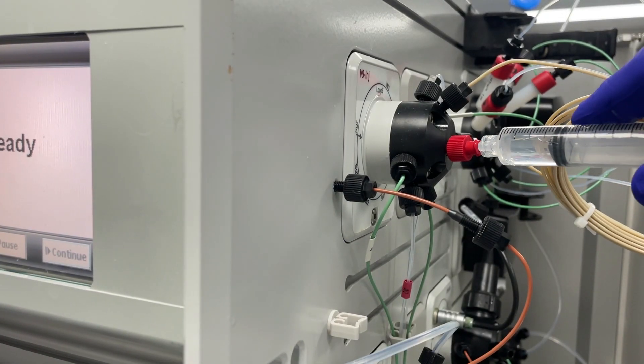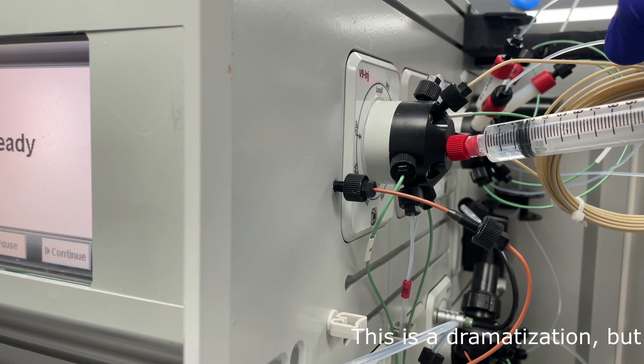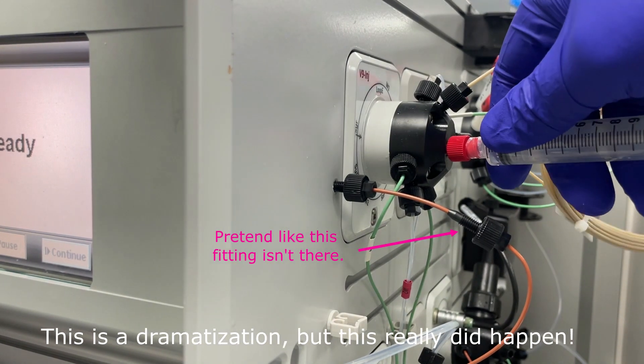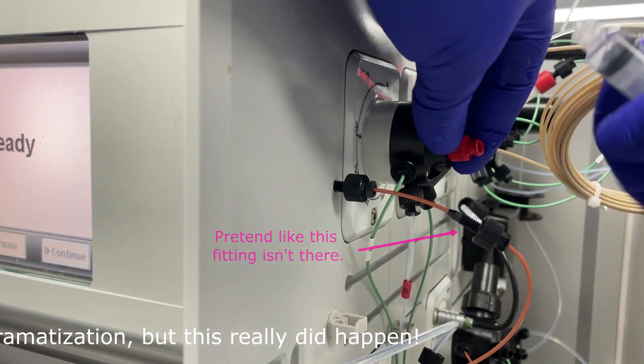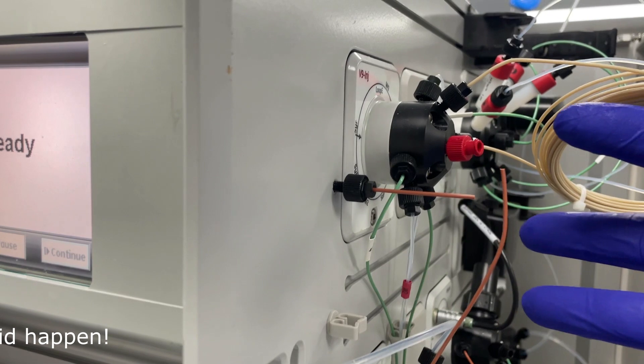A while ago, I was checking the tightness of the fittings with the syringe in my hand, and I pulled my hand away from the Avon in a way that I broke the tube that feeds the fraction collector. This is how I fixed that tube.